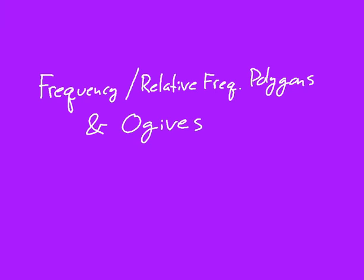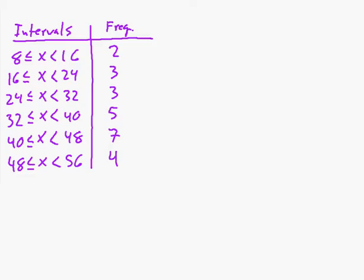Another way to represent data graphically is to do either a frequency or relative frequency polygon or something called an ogive. What we're going to do is start with a data set and we're going to use a frequency table. So here are our intervals and the frequencies.